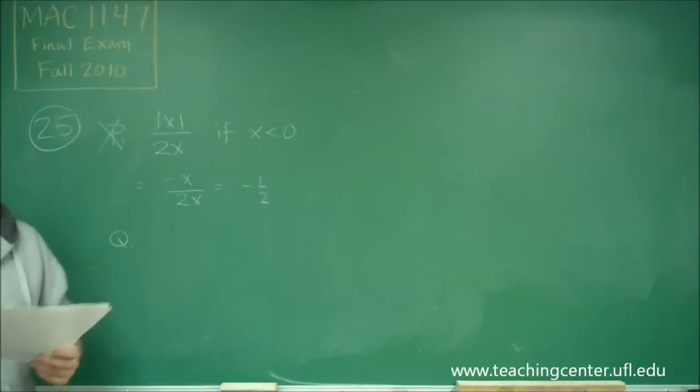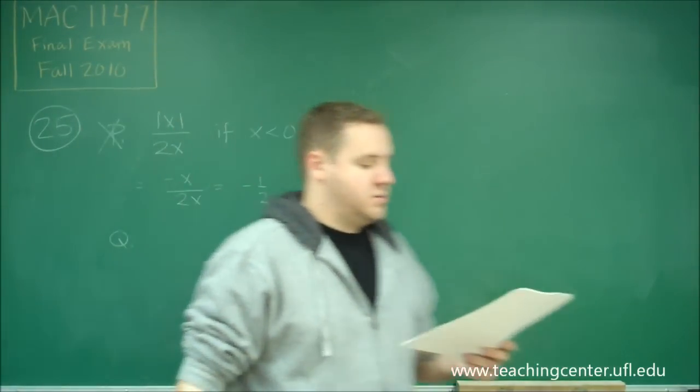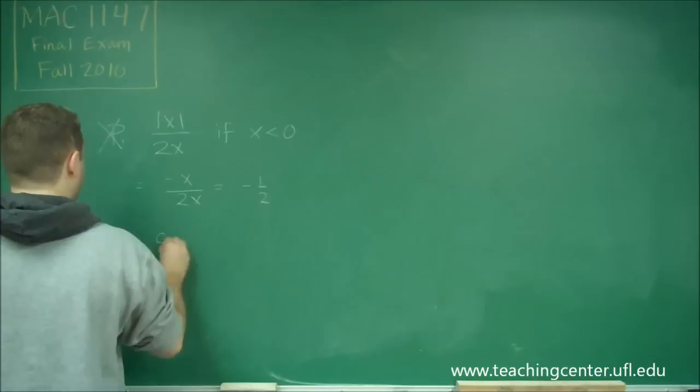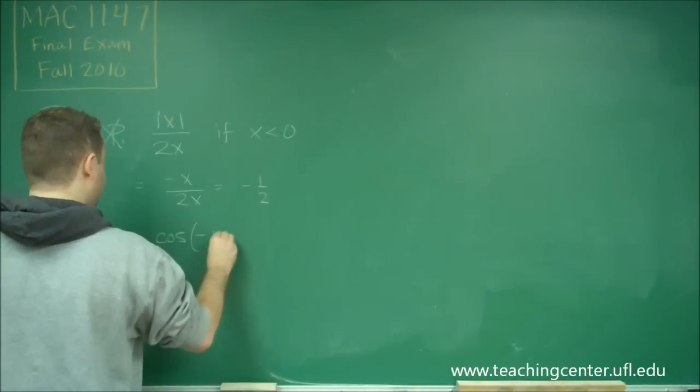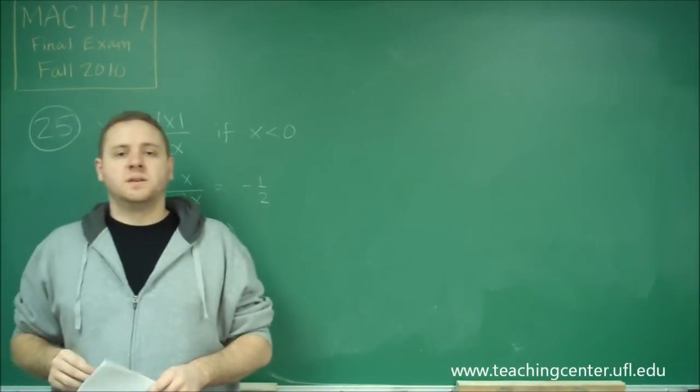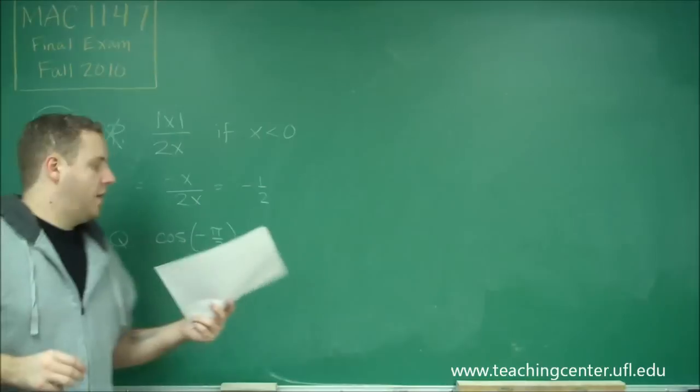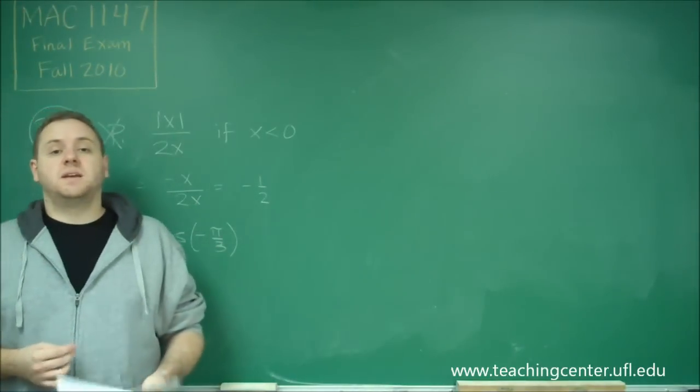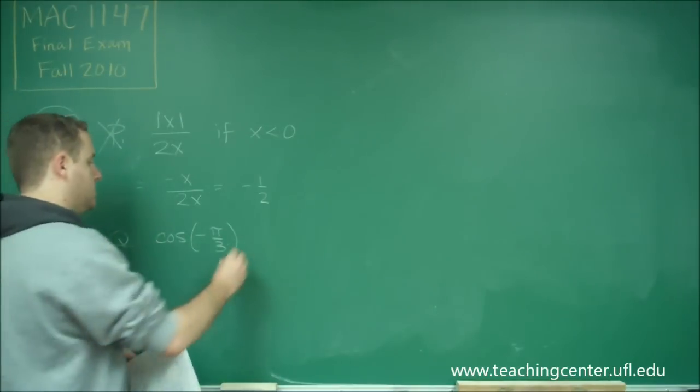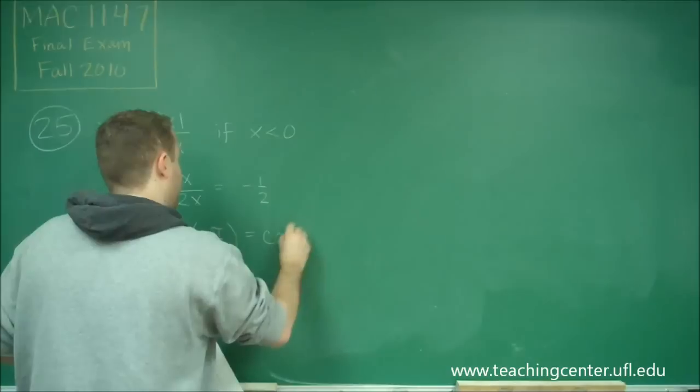Let's look at statement Q. Q says cosine of negative pi over 3. So the easiest way to think about this one is that cosine of a negative angle is always the same as cosine of the positive angle, because cosine is even. So, this is the same thing as just cosine of pi over 3.